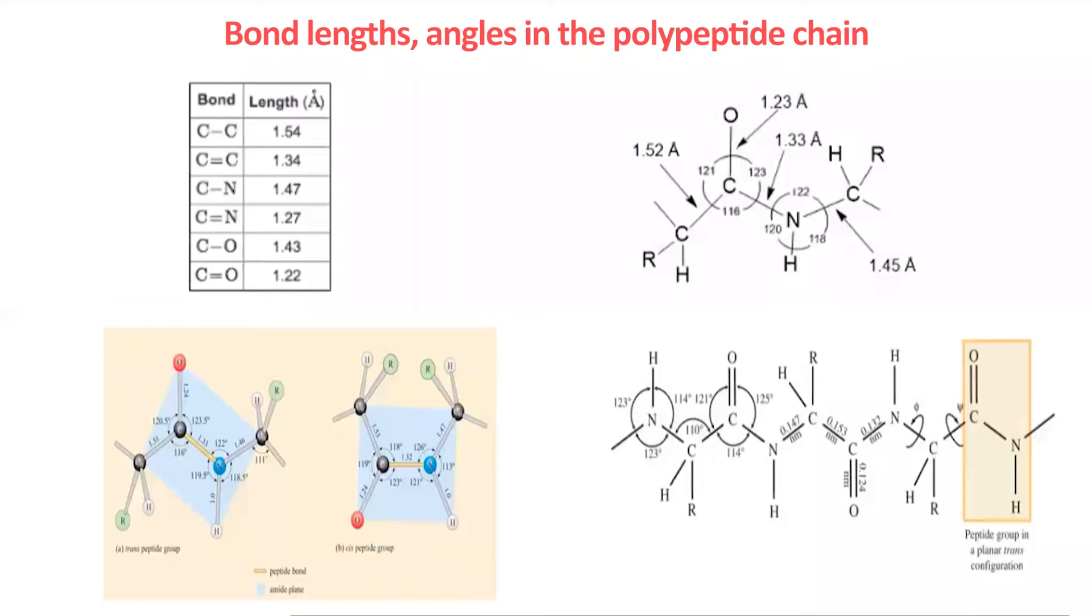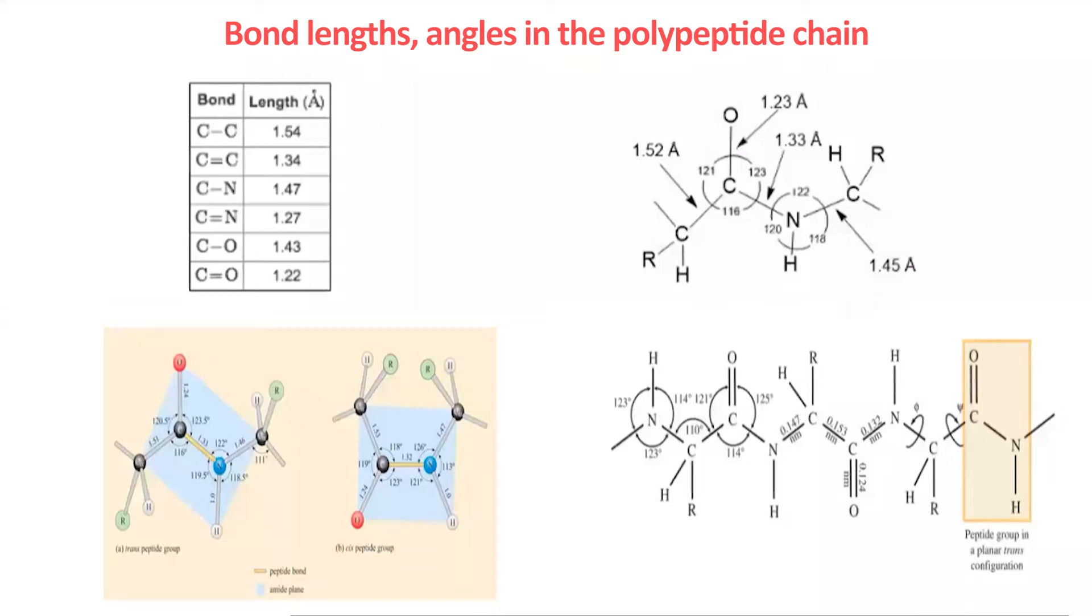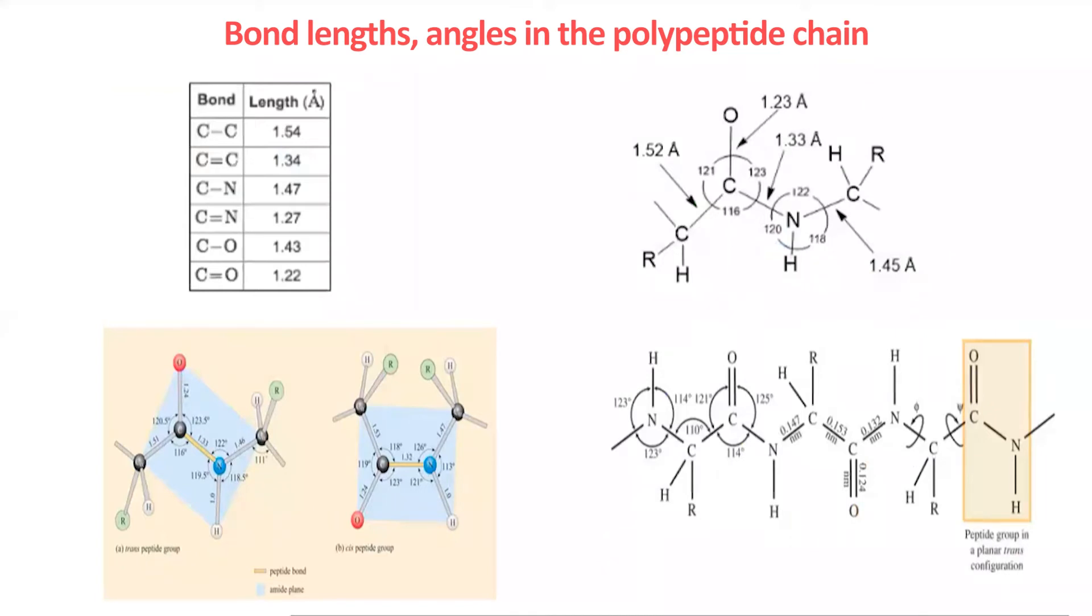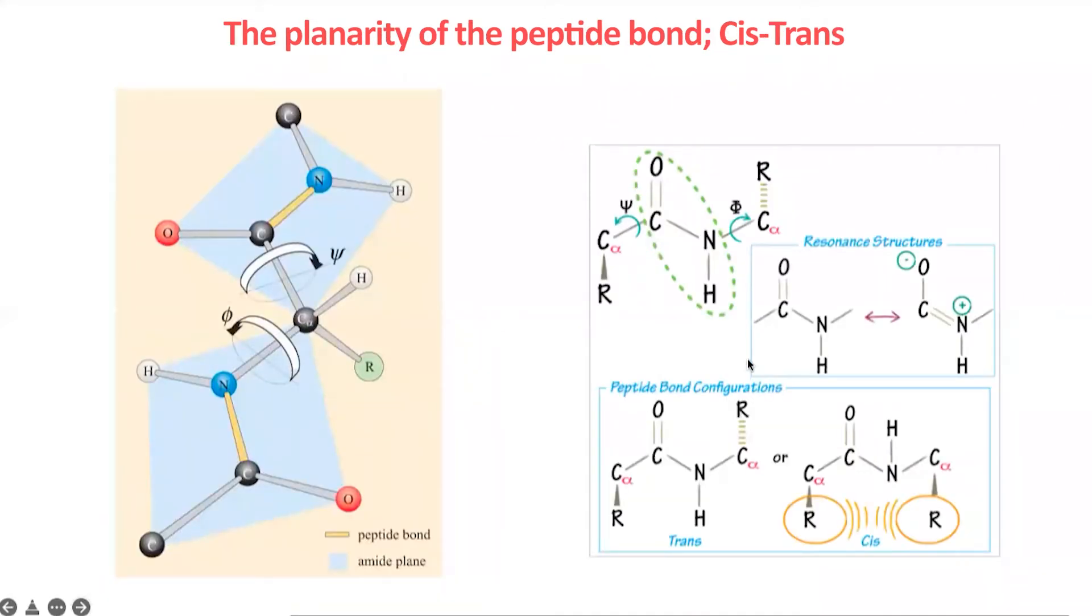The professor explains the difference between dihedral angles and regular angles. Dihedral angles are defined by four atoms, while regular angles are defined by three atoms. Phi-psi angles are important for proteins because, assuming omega is at 180 degrees, they can define the position of any atom in space by just knowing phi and psi. These angles are defined using main chain atoms, not side chain atoms.